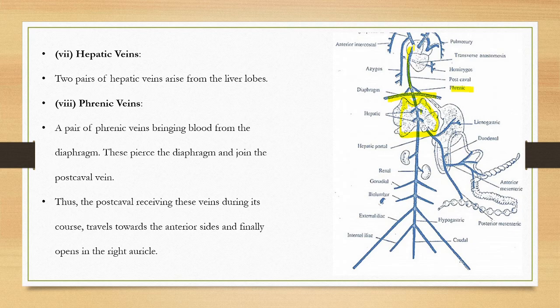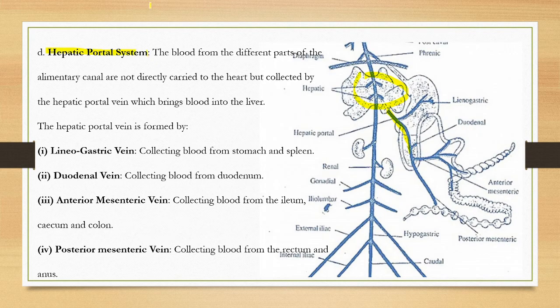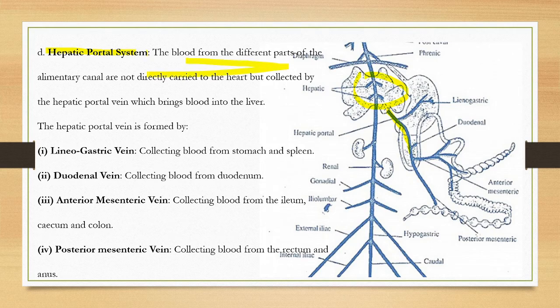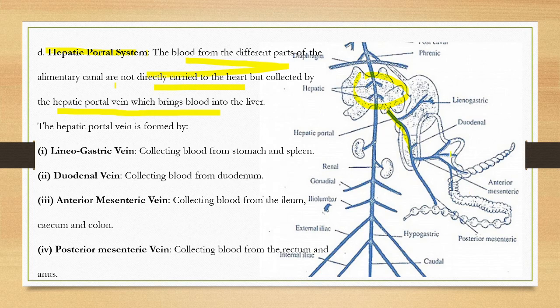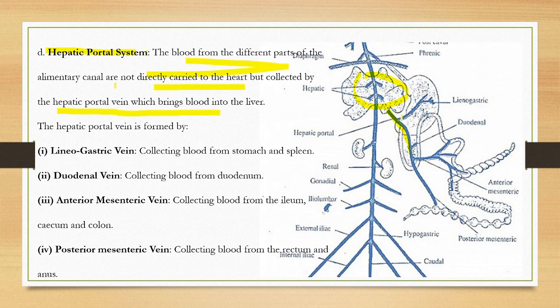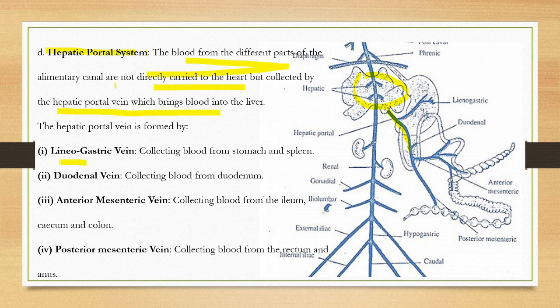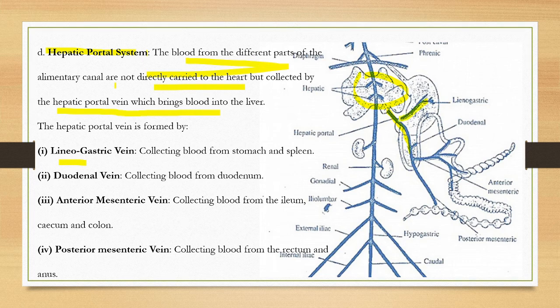Next is the hepatic portal system. Blood from the different parts of the alimentary canal is not directly carried to the heart but collected by the hepatic portal vein, which brings blood into the liver. There is an additional connection between the intestine and liver, so that system is called the hepatic portal system. The hepatic portal vein is formed by the lienogastric vein from the stomach and spleen region.